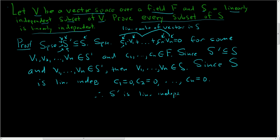Let's go over it one more time. You start by taking a subset of S, call it S prime, and write down a linear combination of vectors in S prime set equal to the zero vector. You have to show all of the scalars are zero — that's what it means for S prime to be independent. Since S prime is a subset of S, all of the vectors are also in S, so you really have a linear combination of vectors in S. But S is independent, so all of the scalars are zero, and we're done. I hope this helps.